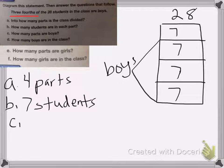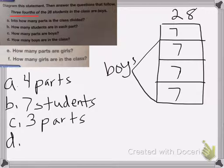Okay, C, how many parts are boys? Well, it tells us that three-fourths are boys, so we know that three parts are boys. Then D, how many boys are in the class? So we need to add these up, or multiply them. Seven times three is equal to 21. So there are 21 boys in the class.